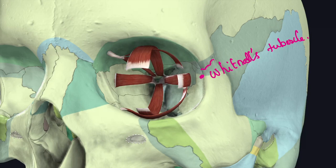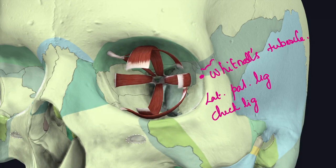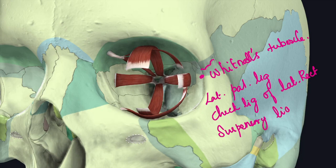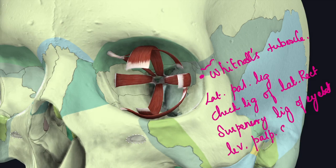Whitnall's tubercle gives attachment to four structures: the lateral palpebral ligament, the lateral rectus muscle, the suspensory ligament of the eyeball, and the levator palpebrae superioris muscle.